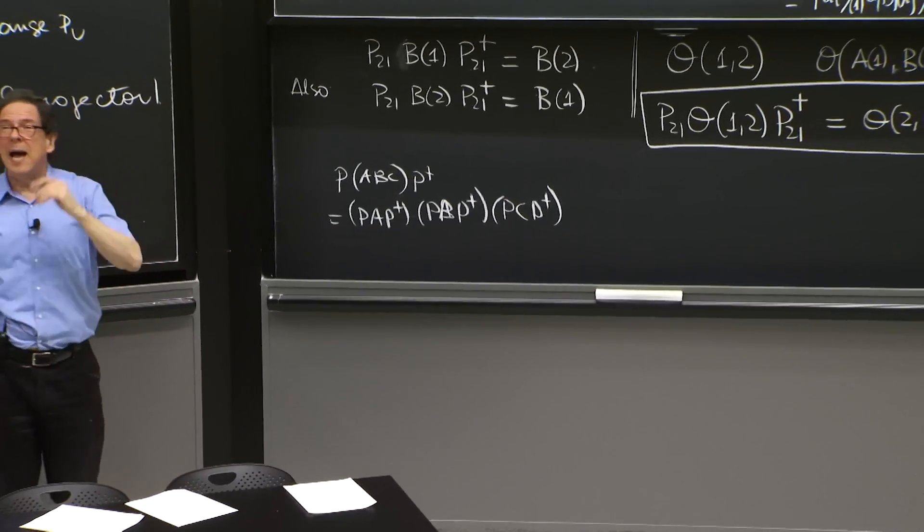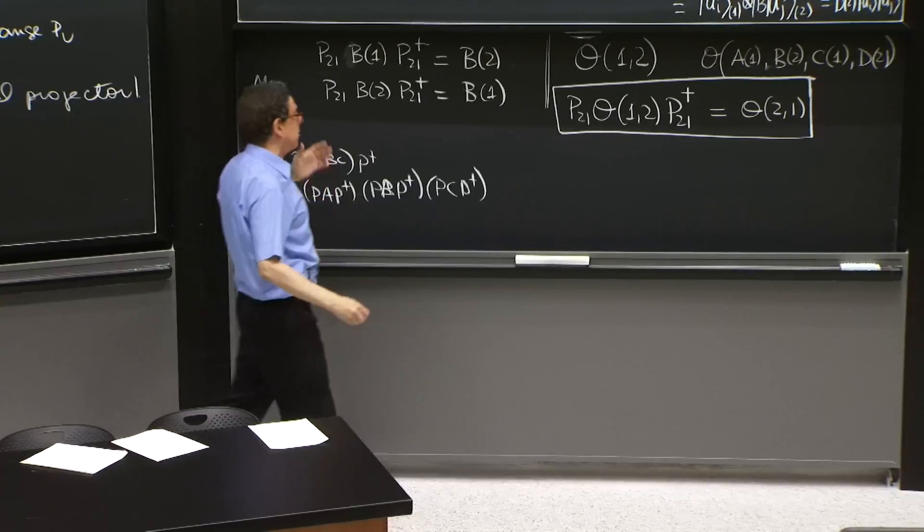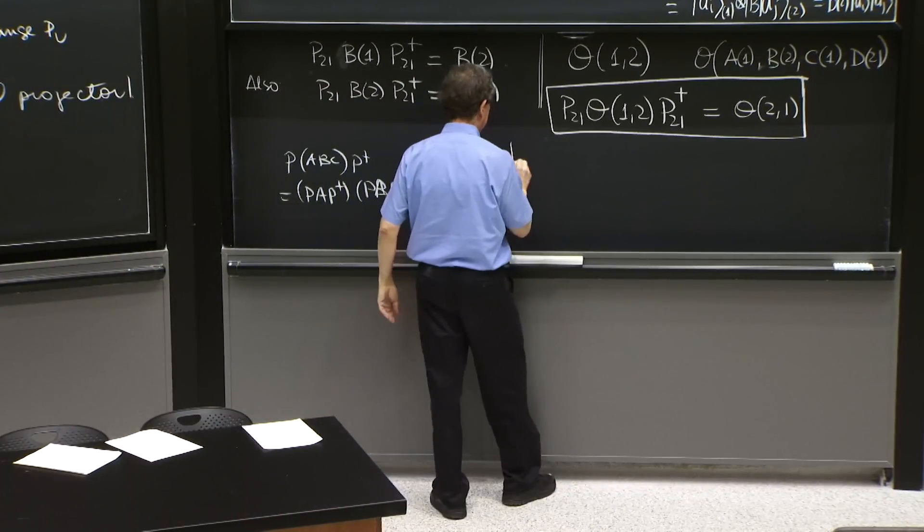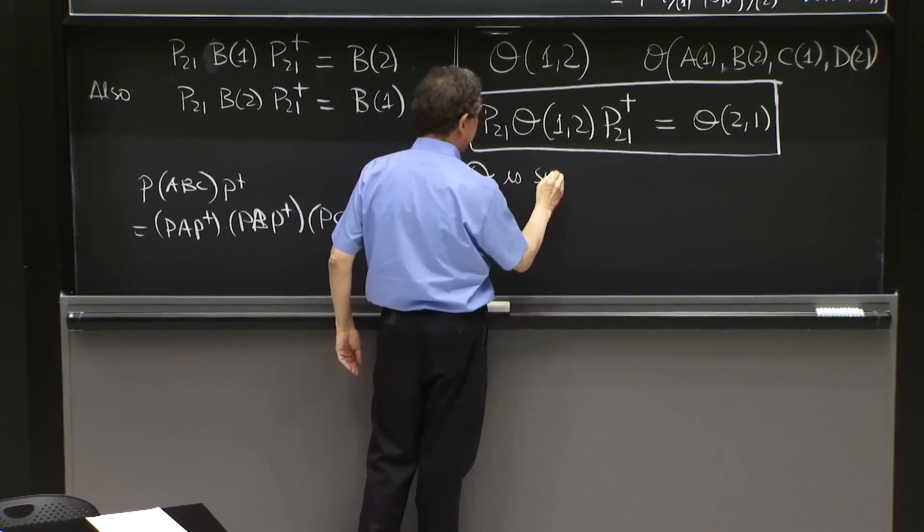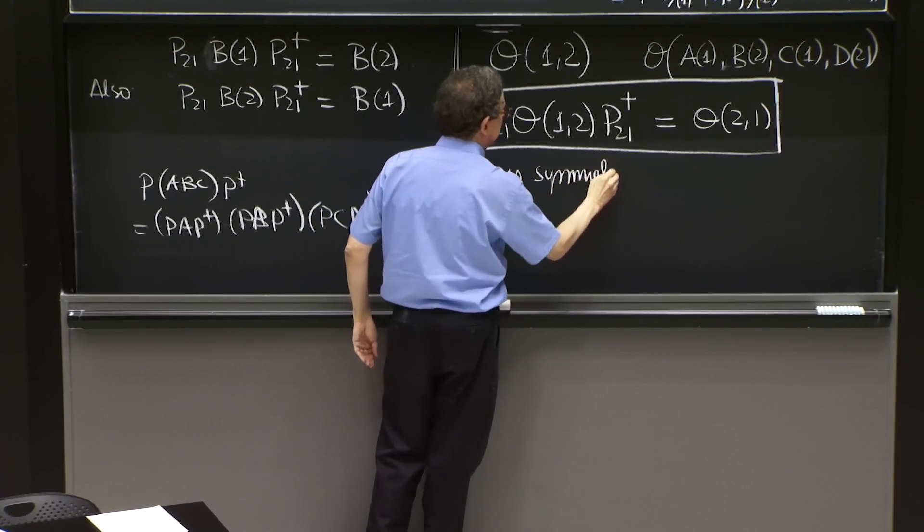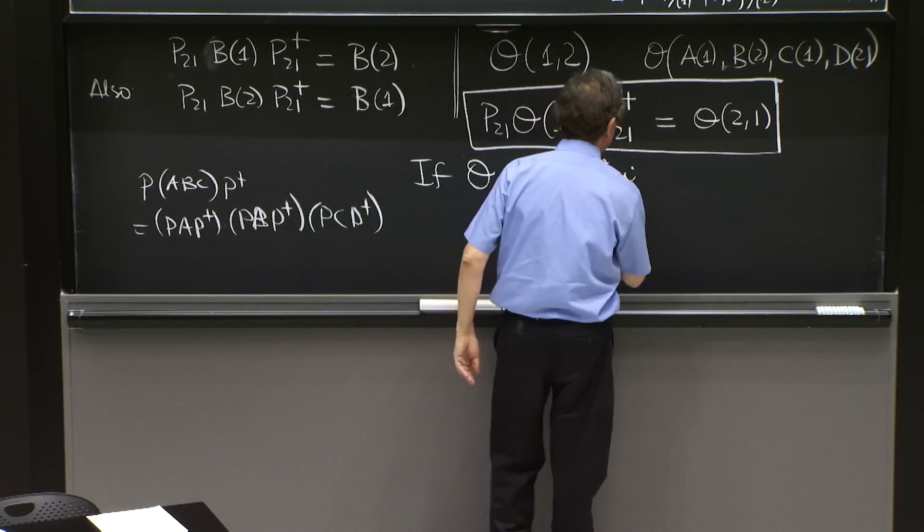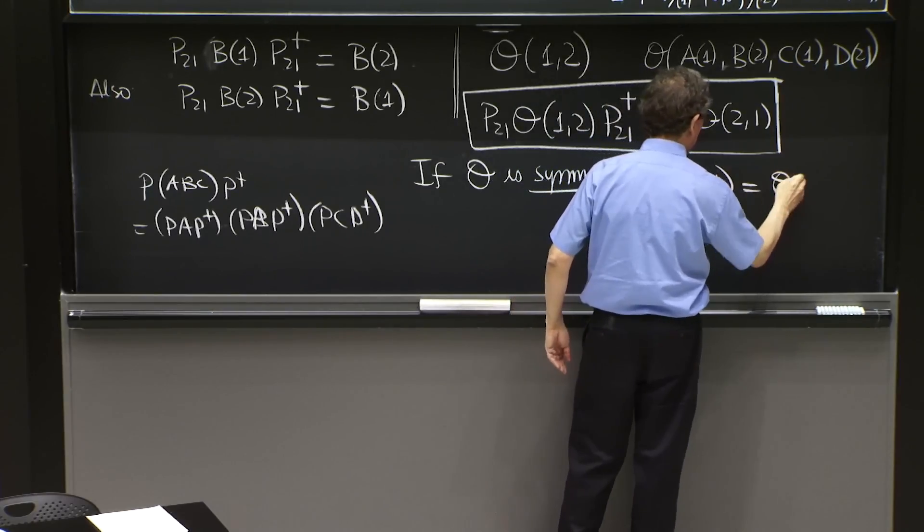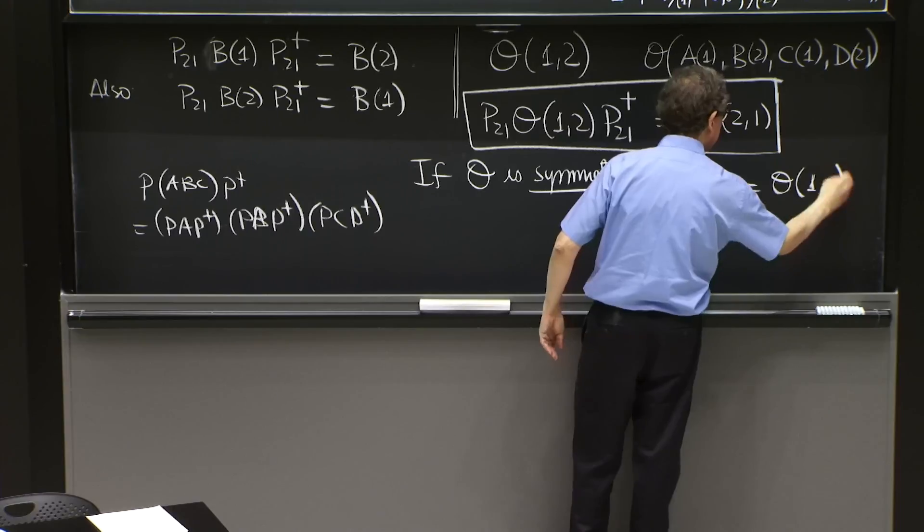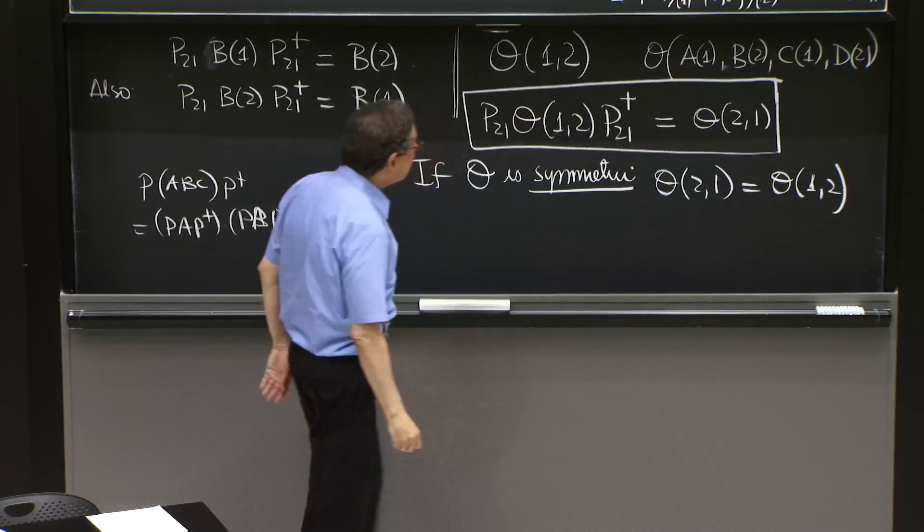Now, it may happen that the operator is symmetric. If O is symmetric, by that we mean O21 is equal to O12.